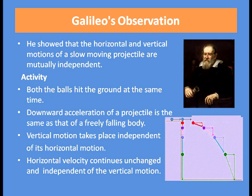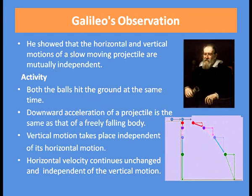Take two balls. One ball is dropped vertically downward and another ball is thrown in the horizontal direction. You can see that both the balls hit the ground at the same time. So the downward acceleration of a projectile is the same as that of a freely falling body. Both balls have the same downward acceleration.